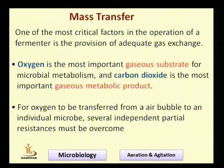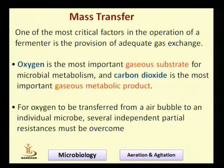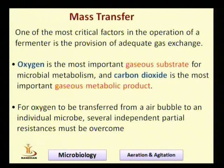Oxygen supply in fermentation is carried out in the form of air bubbles. Oxygen is transferred from the air bubble to the bulk liquid medium, and from there it is ultimately transferred to the surface of the microbial cell, where it enters the cell and is utilized by the organism for metabolic activity. This entire path from the air bubble to the inside of the cell is called mass transfer.